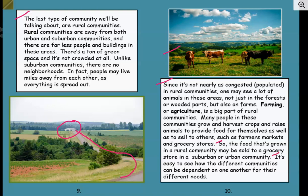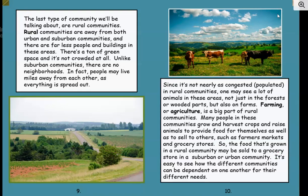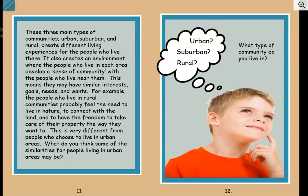That Publix we saw in that suburban community may rely on rural communities to grow their food and sell it there. It's easy to see how the different communities can be dependent on one another for their different needs. These three main types of communities — urban, suburban, and rural — create different living experiences for the people who live there. It also creates an environment where people develop a sense of community with those who live near them, meaning they may have similar interests, goals, needs, and wants.